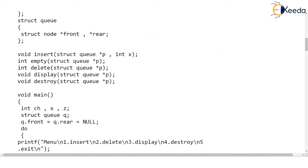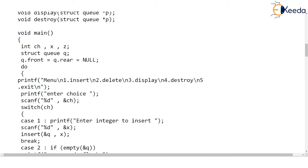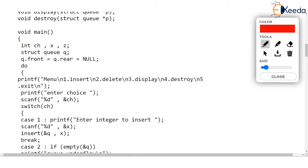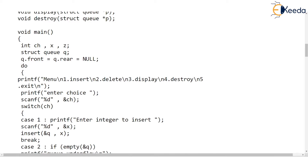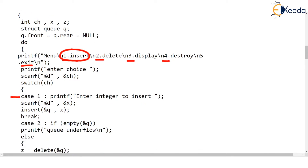Now let's look at the menu-driven main again. In main we have a do-while loop where we print the menu: option one for insert, two for delete, three for display, four for destroy, and five for exit. If the user selects option one (insert), case one executes in the switch, where we ask the user to enter an integer and scan that value into a local variable X.